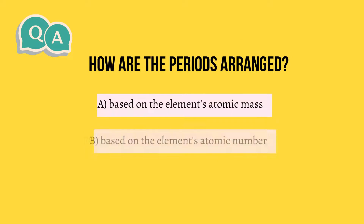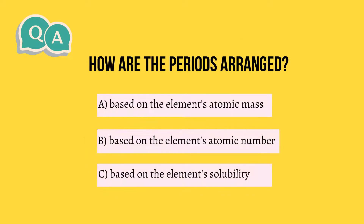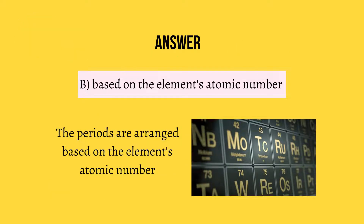Question 2: How are the periods arranged? A. Based on the element's atomic mass, B. Based on the element's atomic number, C. Based on the element's solubility. The answer is B. Based on the element's atomic number — the periods are arranged based on the element's atomic number.